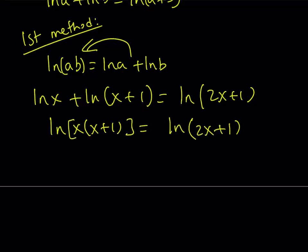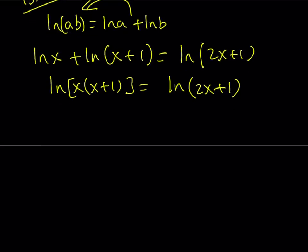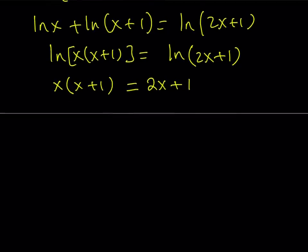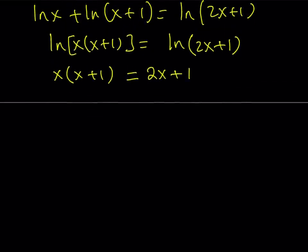Now, since we have ln on both sides, two logarithms with the same base, I can basically say that the arguments are equal. So in other words, x times (x+1) must equal 2x+1. So this is kind of interesting, too, because we're talking about two numbers whose sum equals their product, and they differ by 1. We'll talk about this in more detail a little later.